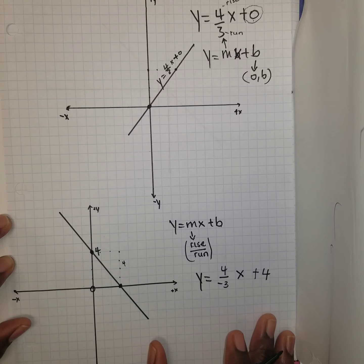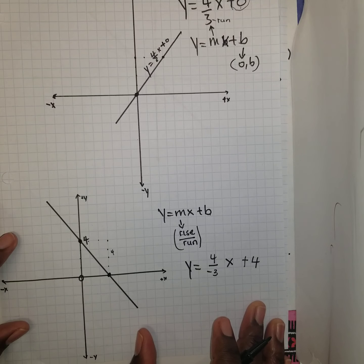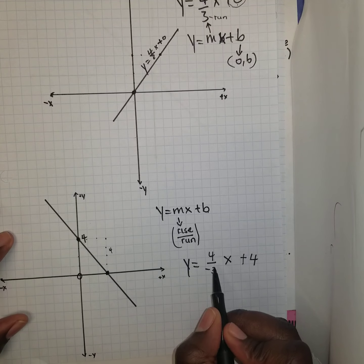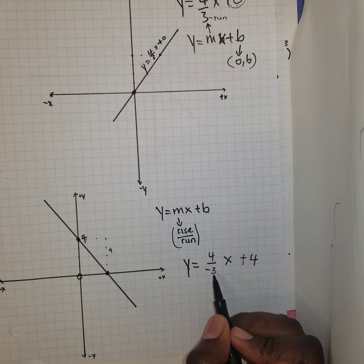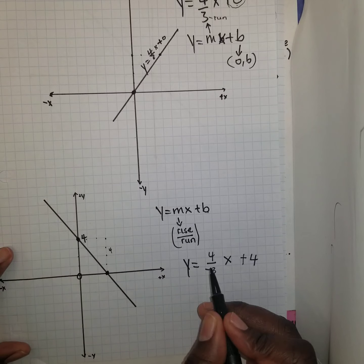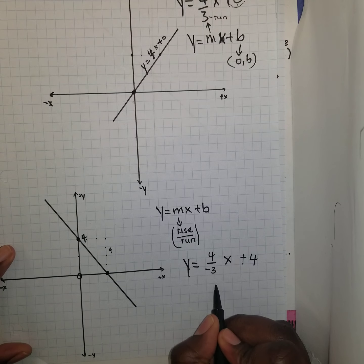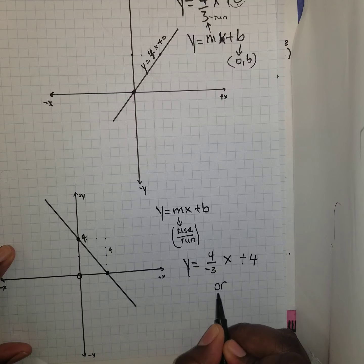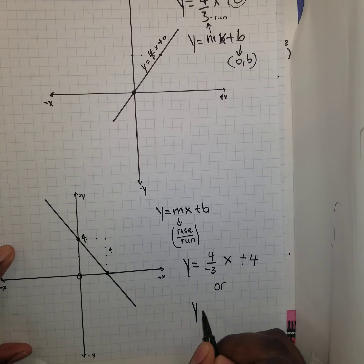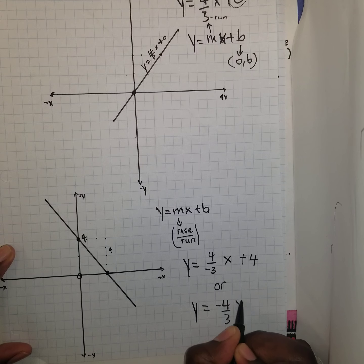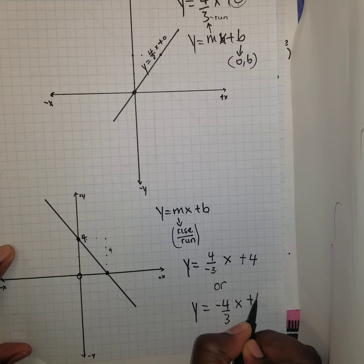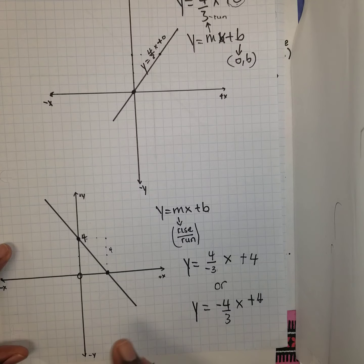You can rewrite the fraction. Remember, once the denominator of a fraction is negative, the entire fraction is negative. So this gives us y equals negative 4 over 3 x plus 4. And that's basically how we do it.